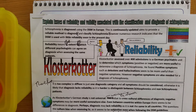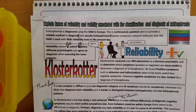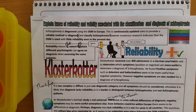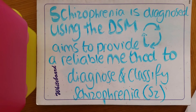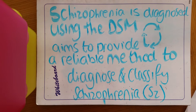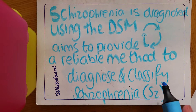Today's essay we'll be focusing on is explaining issues of reliability and validity associated with the classification and diagnosis of schizophrenia. It is diagnosed using the DSM in Europe, which is continuously updated and aims to provide a reliable method to diagnose and classify schizophrenia. If you write schizophrenia out fully once, you can then abbreviate it to SZ.